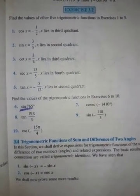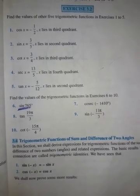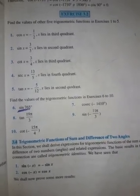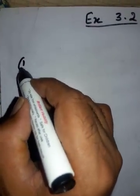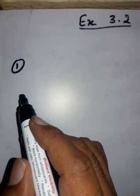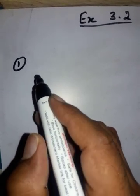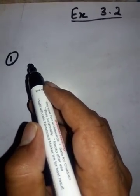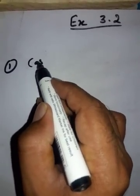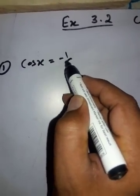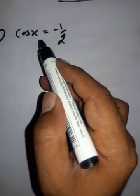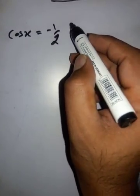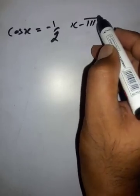Now exercise 3.2 of NCERT. The first question: find the values of the other 5 trigonometric functions. It is given that cos x = -1/2, and x lies in the 3rd quadrant.